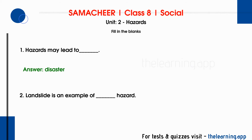Second question: landslide is an example of a dash hazard. The correct answer is geologic or seismic hazard. A seismic hazard involves movement in the earth or vibration. Landslide is a seismic or geologic hazard because it involves a boom or vibration in the earth.